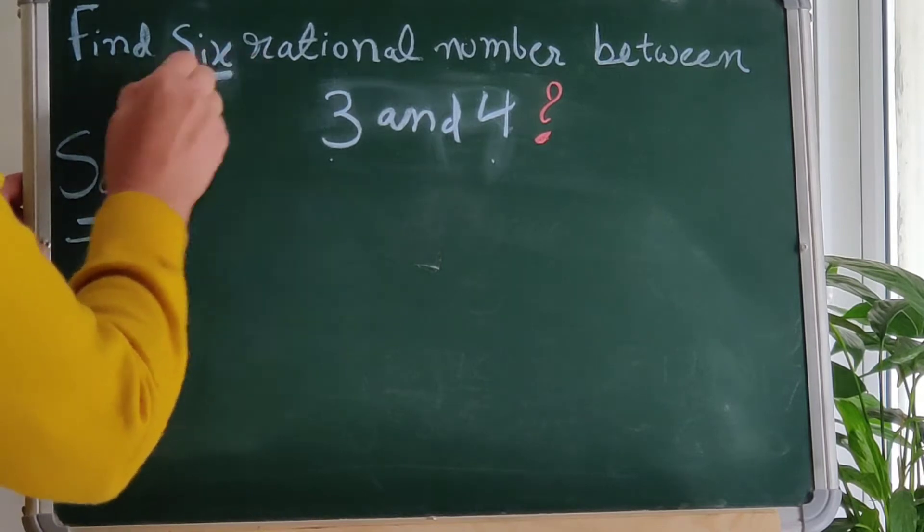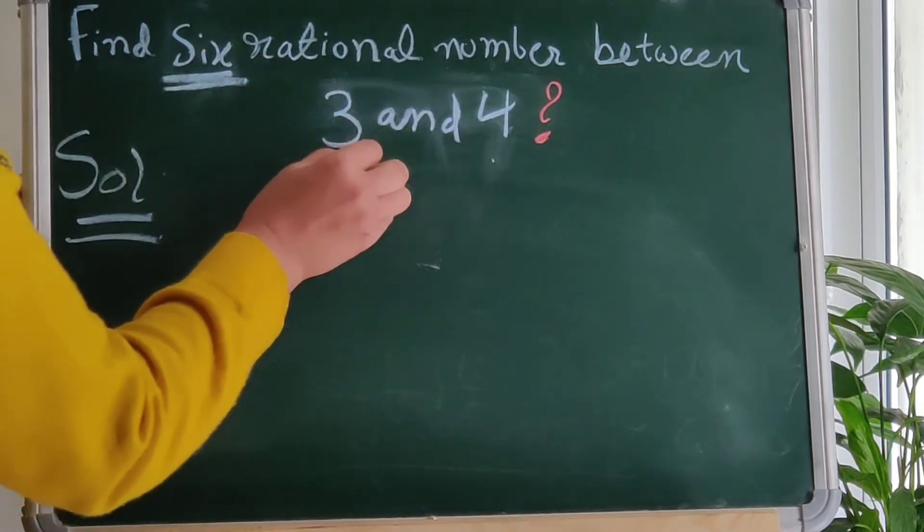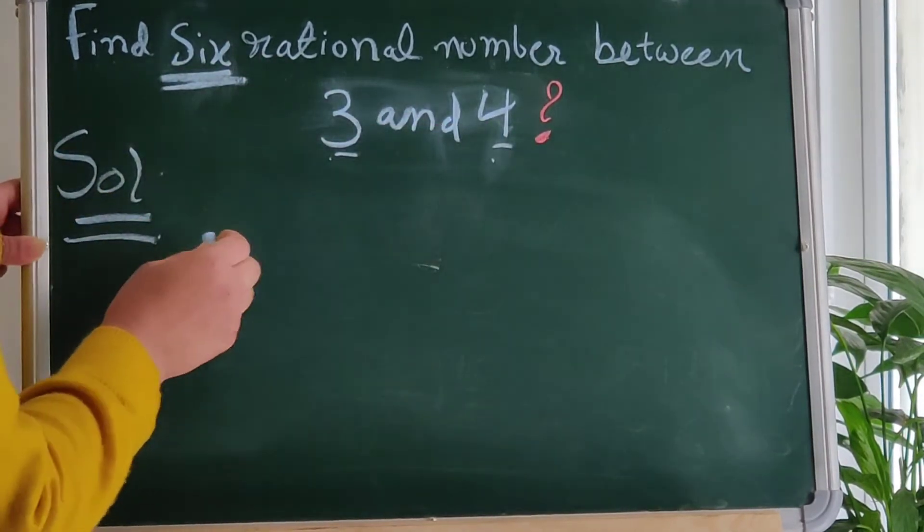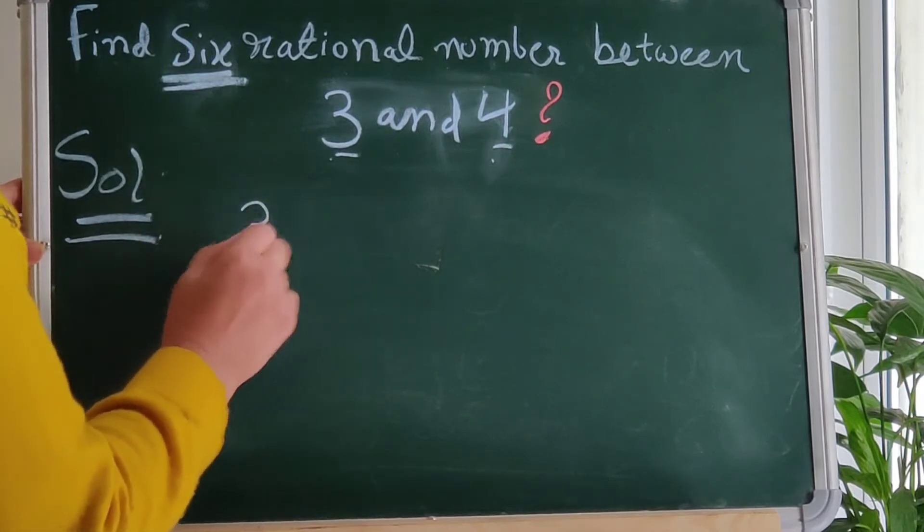We have to find out 6 rational numbers. So we divide and multiply both numbers by 6 plus 1, which is 7.